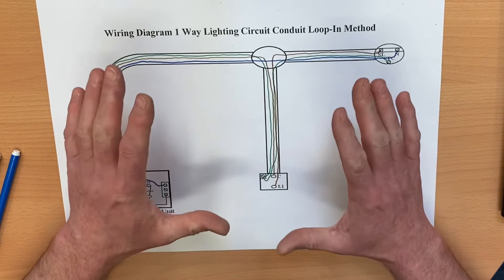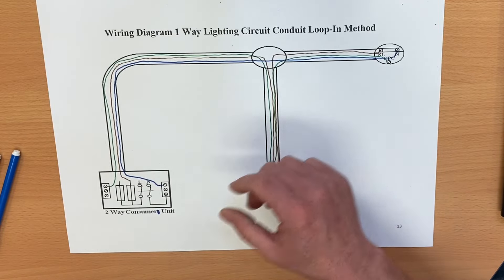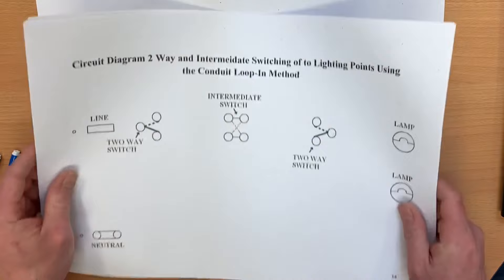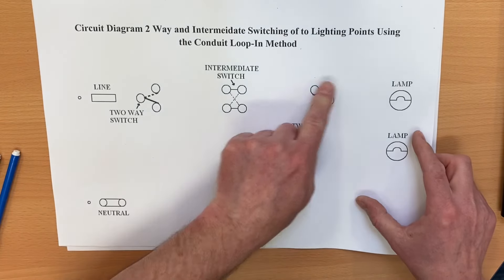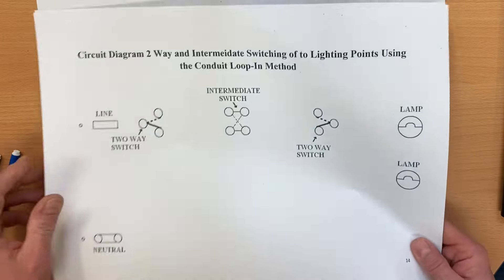As we move on, we're going to look at some other stuff. We'll end up looking at things like this. We'll end up looking at a more complicated two-way intermediate with two lamps as a circuit diagram. We can apply it then as a wiring diagram.